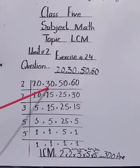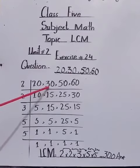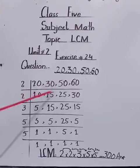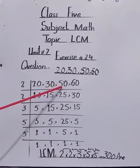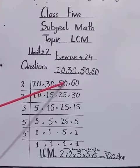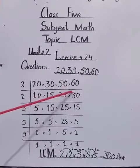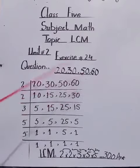2 times 1 is 2, from 3 we will take up 2, 1 remains, 10 divided by 2, 5 times 2 is 10. 2 times 2 are 4, from 5 we will take up 4, 1 remains, 10 divided by 2, 5 times 2 is 10. 2 times 3 are 6, 2, 0, 0.